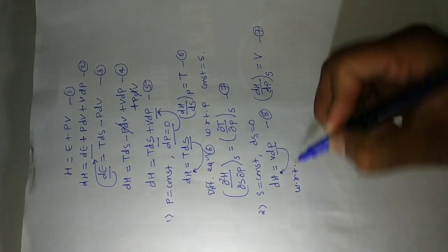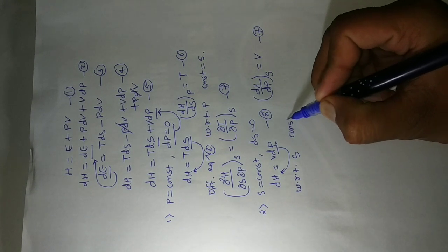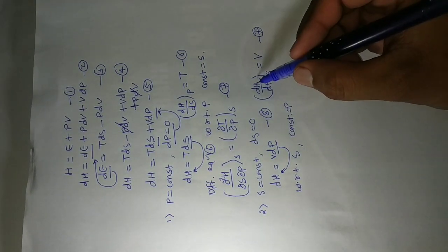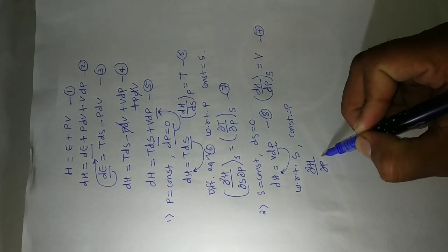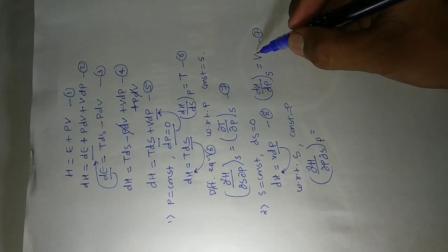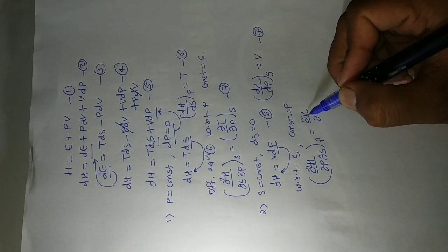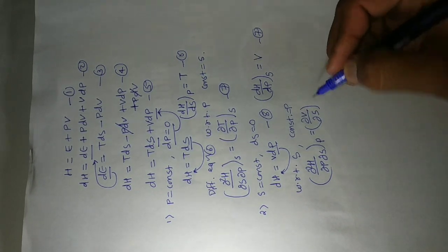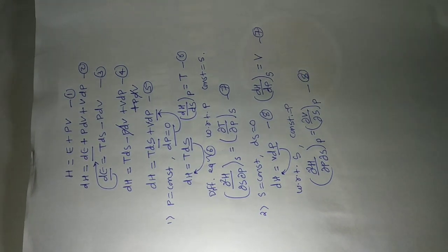Now we differentiate equation eight with respect to entropy at constant pressure. We get the double differentiation of H with respect to pressure and then entropy at constant pressure, which equals the differentiation of volume V with respect to entropy at constant pressure. This is equation number eight.